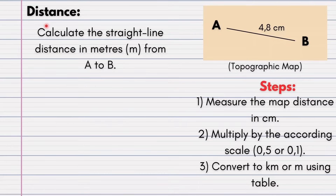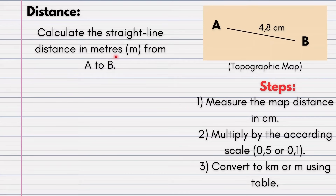Distance is a relatively simple calculation — there's nothing too complicated. It's just how you read and comprehend the question. Our question here states: calculate the straight line distance in meters from A to B. Straight away we can see they want the answer in meters, so we identify what type of map it is. From here we can see it is a topographic map, so we multiply by 500.